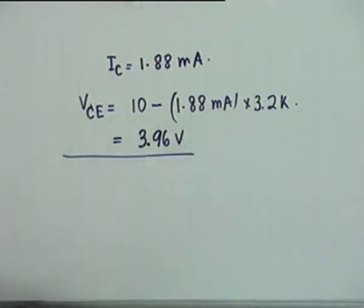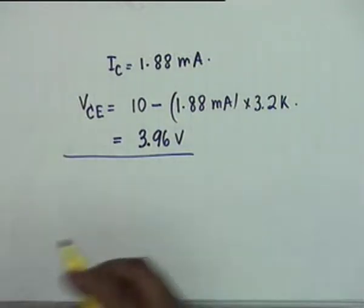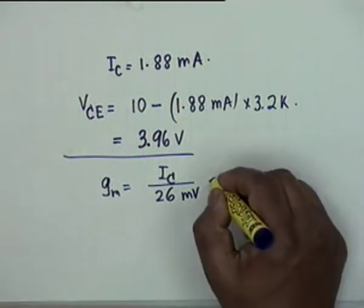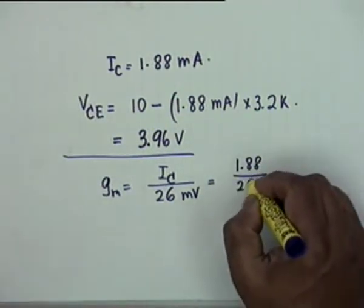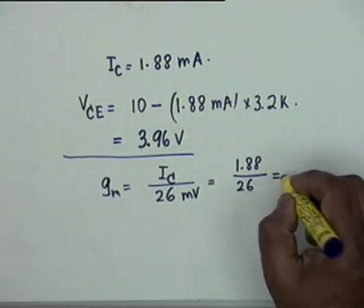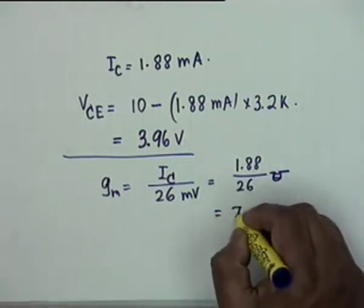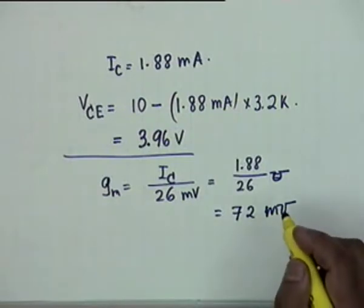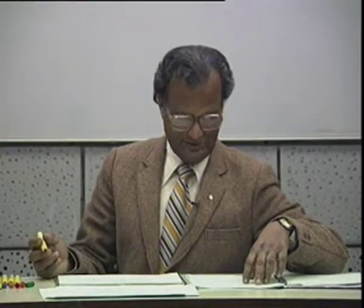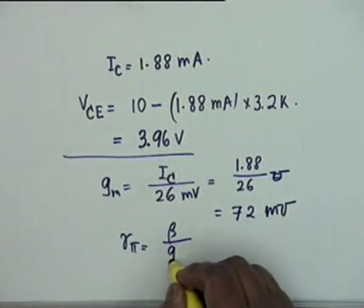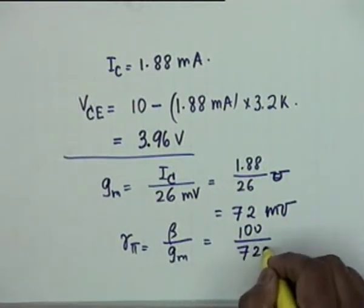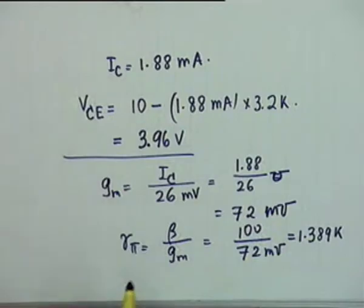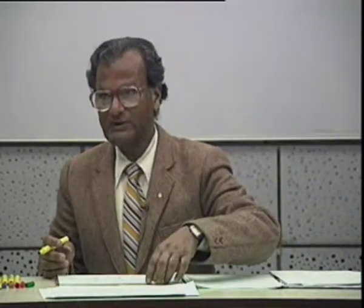From the Q-point, gm = IC/26mV = 1.88/26 = 72 milli-mhos. Rpi = β/gm = 100/72×10⁻³ = 1.389 kΩ. These are the small-signal parameters.